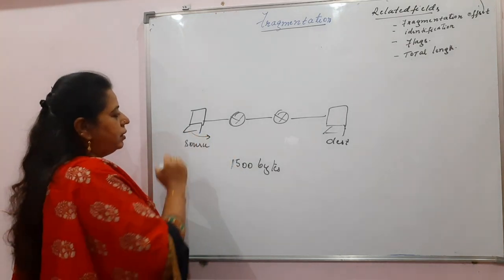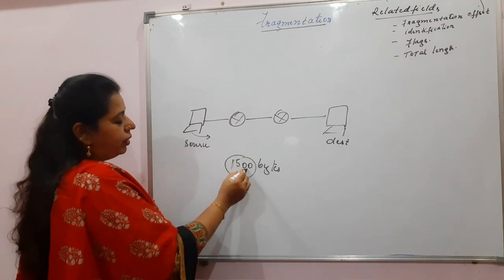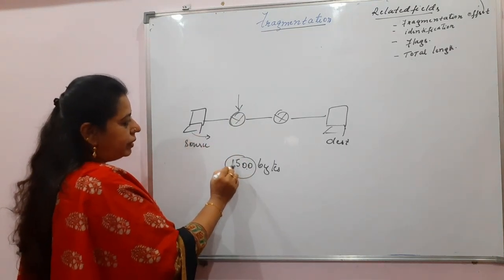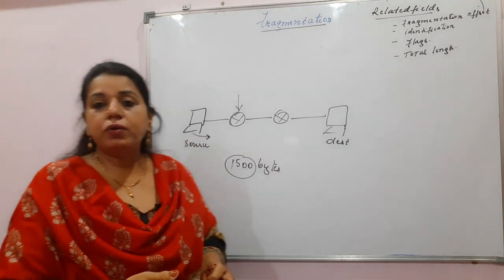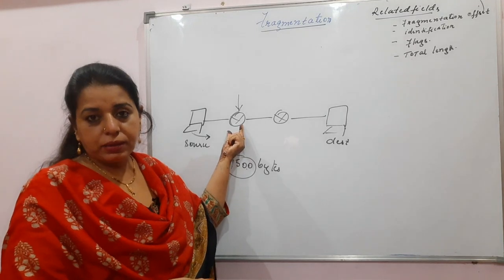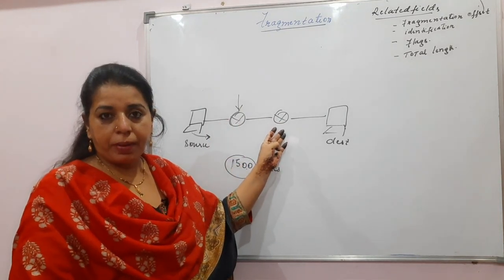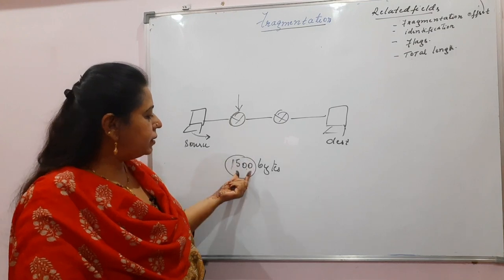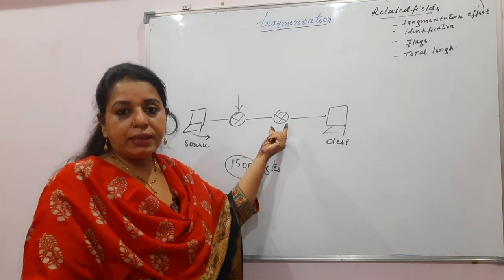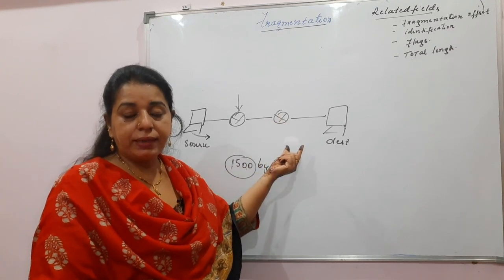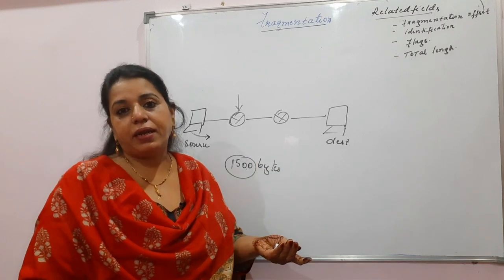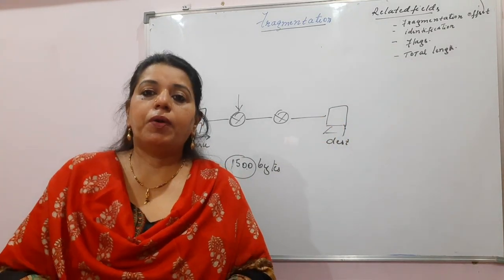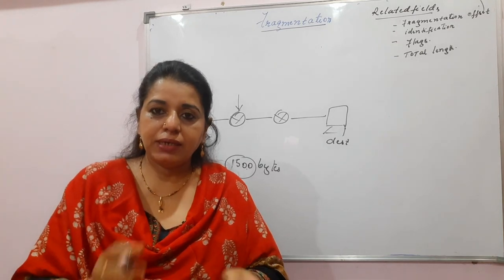Suppose the original packet from the source is larger than 1500 bytes. The network, which only accepts packets up to 1500 bytes, requires the original packet to be divided into smaller packets. Likewise, the next network may require further division if it accepts packets smaller than 1500 bytes. Finally, when the divided packets reach the destination, we call them fragments. All fragments reach the destination.